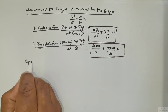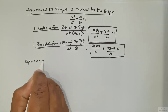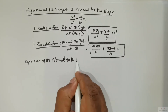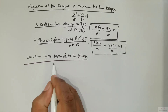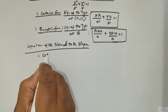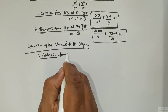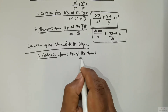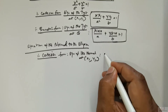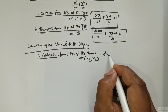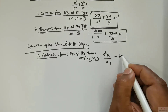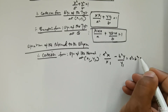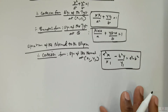Now we are going to talk about the equation of the normal to the ellipse in Cartesian form. The equation of the normal at x1, y1 is given as a squared x divided by x1, negative b squared y divided by y1, is equal to a squared negative b squared. Remember, you have to remember this.